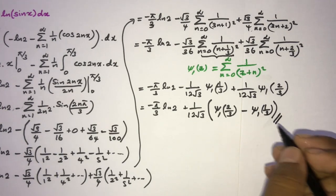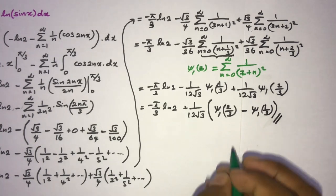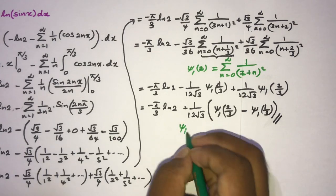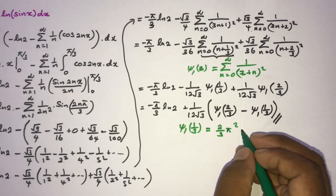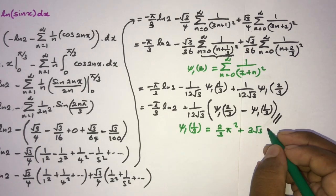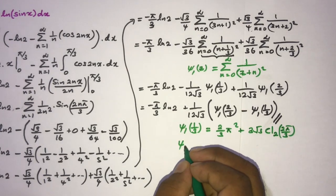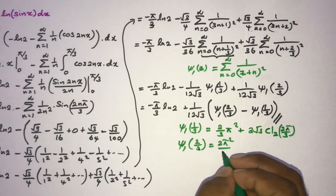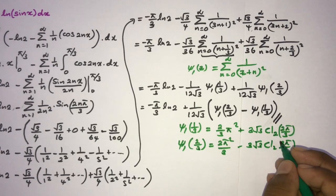We can further simplify using the special values of the trigamma function. We know ψ₁(1/3) = 2π²/3 + 3√3 · Cl₂(2π/3), where Cl₂ is the Clausen function.